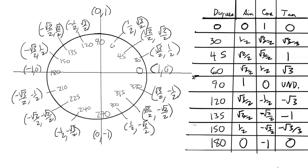Please keep in mind as we go to the second quadrant, cosine will be negative. Likewise, within the second, third, and fourth quadrants, there's always at least one trig function which has a negative value or negative sign.